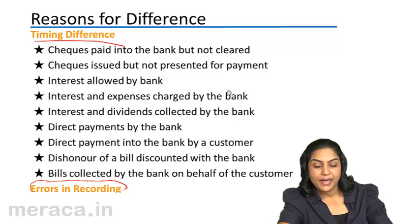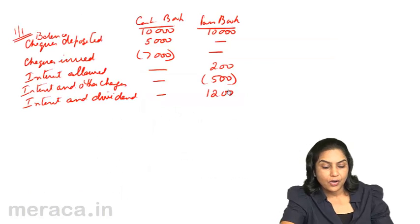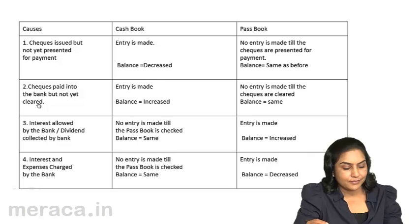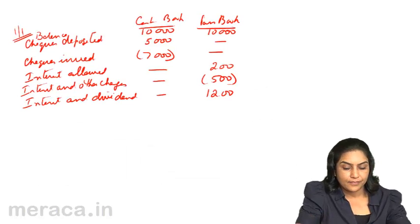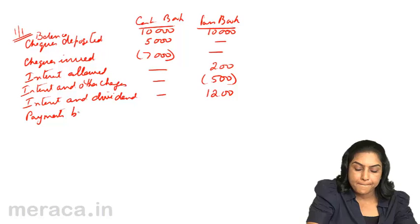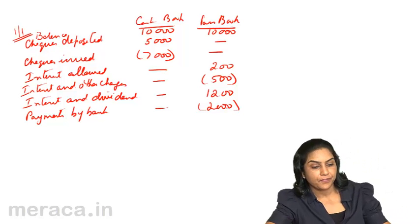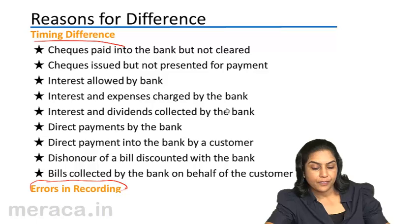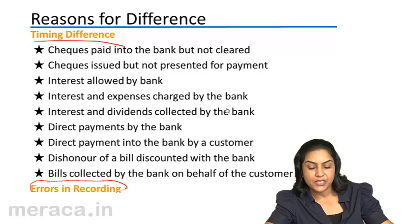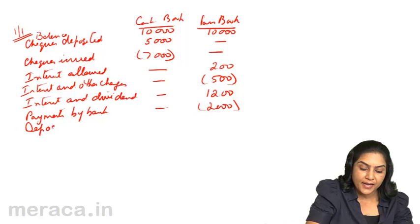Direct payments by the bank: the bank has made payments on our behalf, maybe due to some standing instructions. Similarly, direct payment into the bank by a customer means the customer has directly deposited money into our bank account.